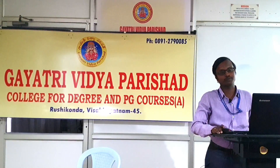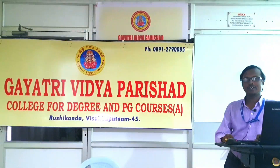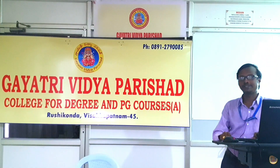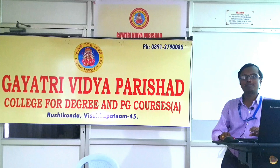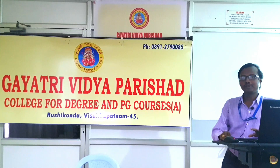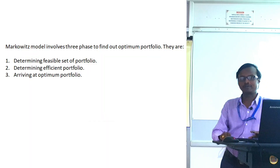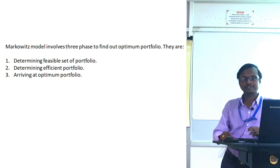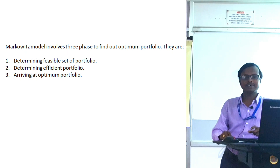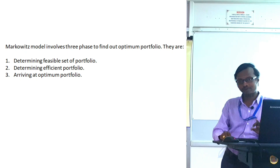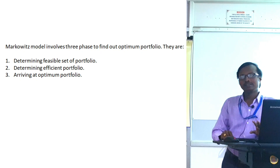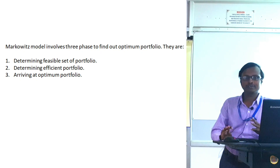In this session I would like to explain the steps involved and give a practical exposure of how to construct a portfolio using the Markowitz model. This model is very easy to understand but complex to calculate because of the large number of calculations. It involves three steps in construction of an optimal portfolio: step one is determining the feasible set of portfolios, step two is determining the efficient portfolio, and step three is arriving at the optimal portfolio.